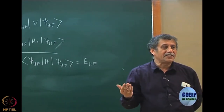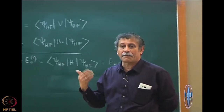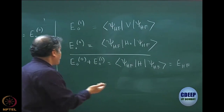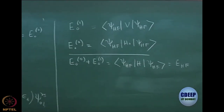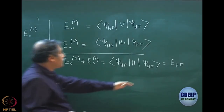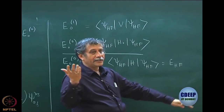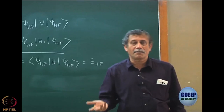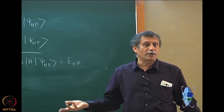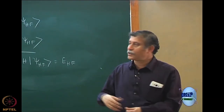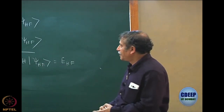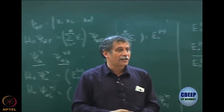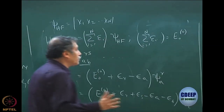That is the reason the genesis of correlation theory starts from MP2. MP2 is the first correlation energy, because correlation energy is going beyond Hartree-Fock — it is the difference between exact energy and Hartree-Fock energy. Unless you have improved from Hartree-Fock, you do not have any correlation energy. So correlation starts only at second order. At first order, there is no improvement.